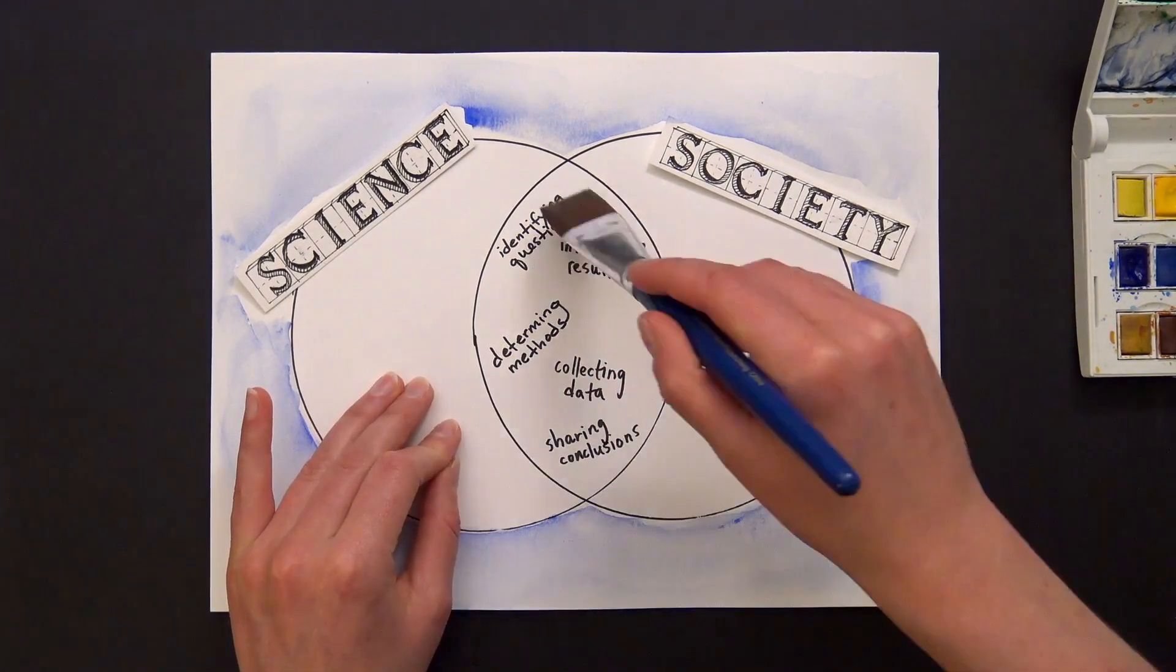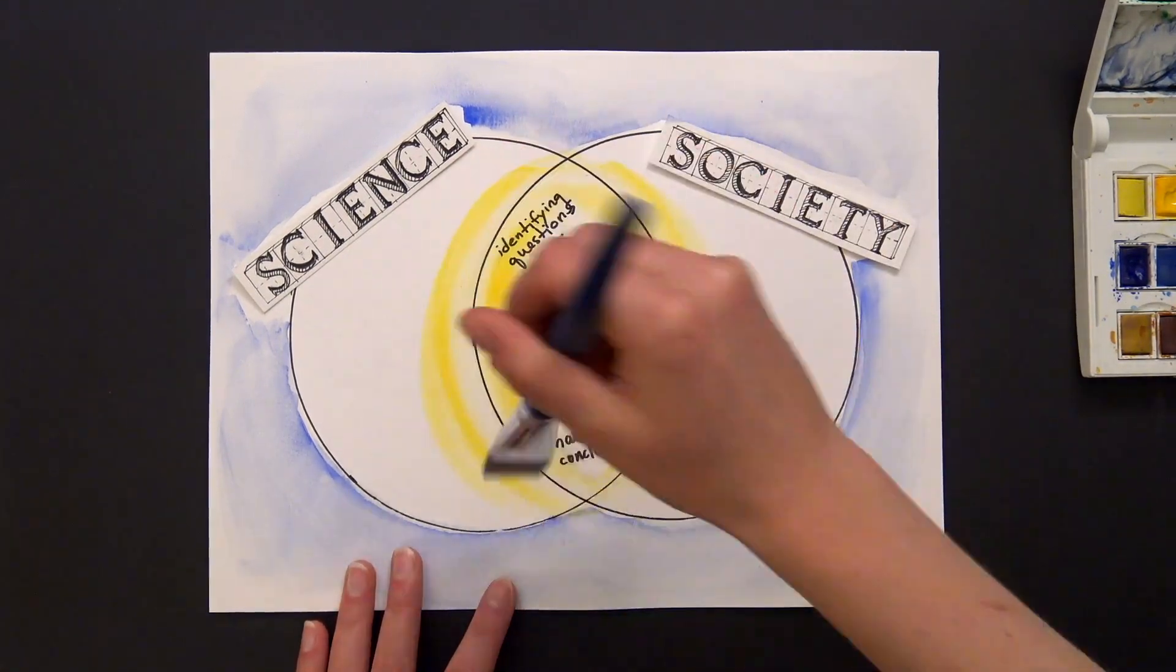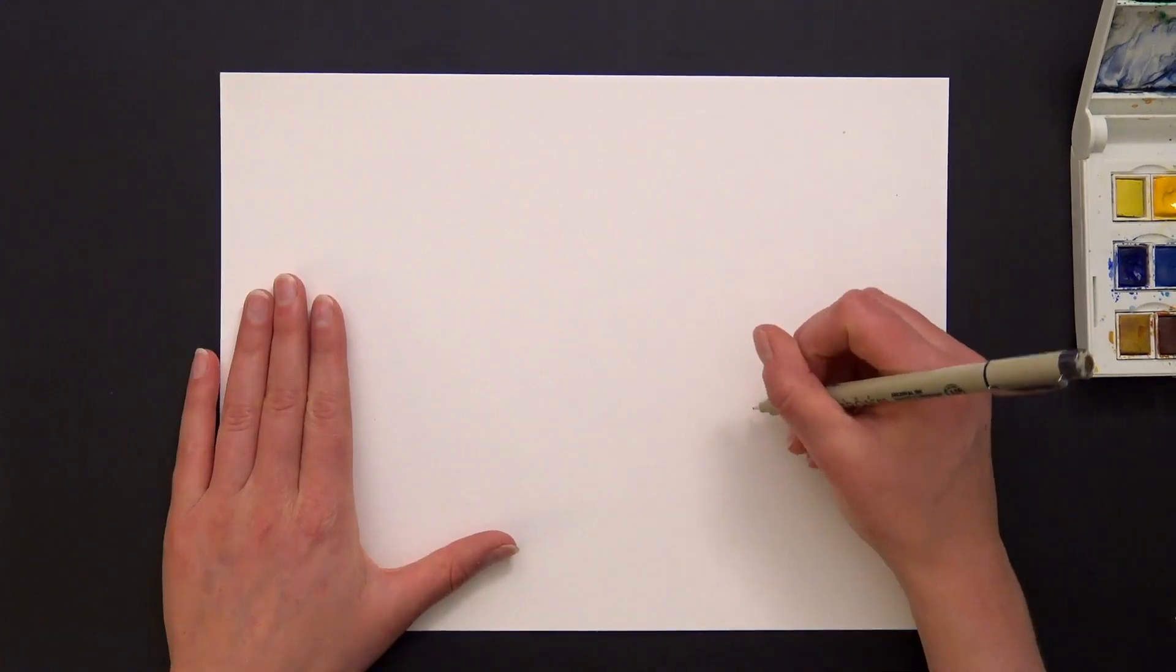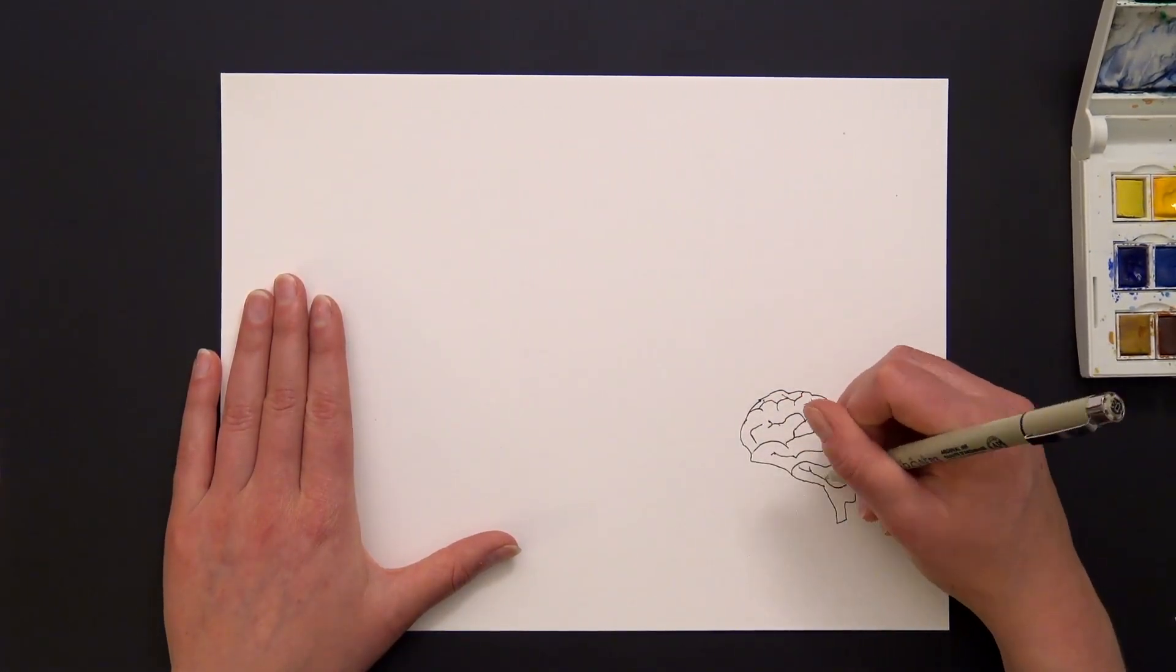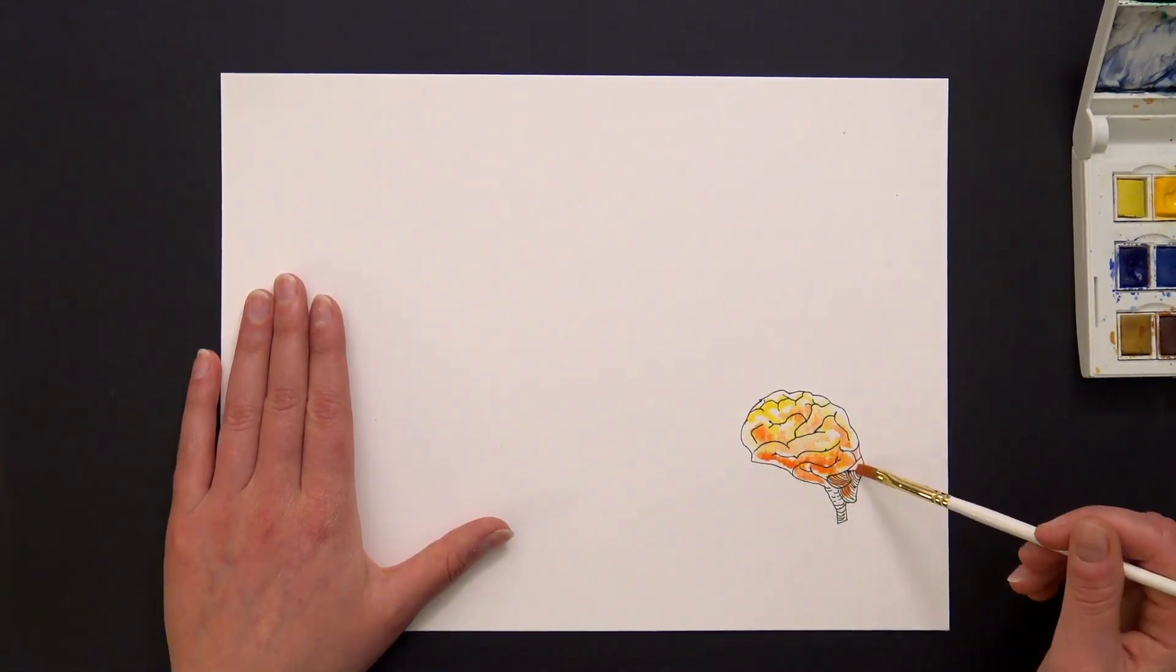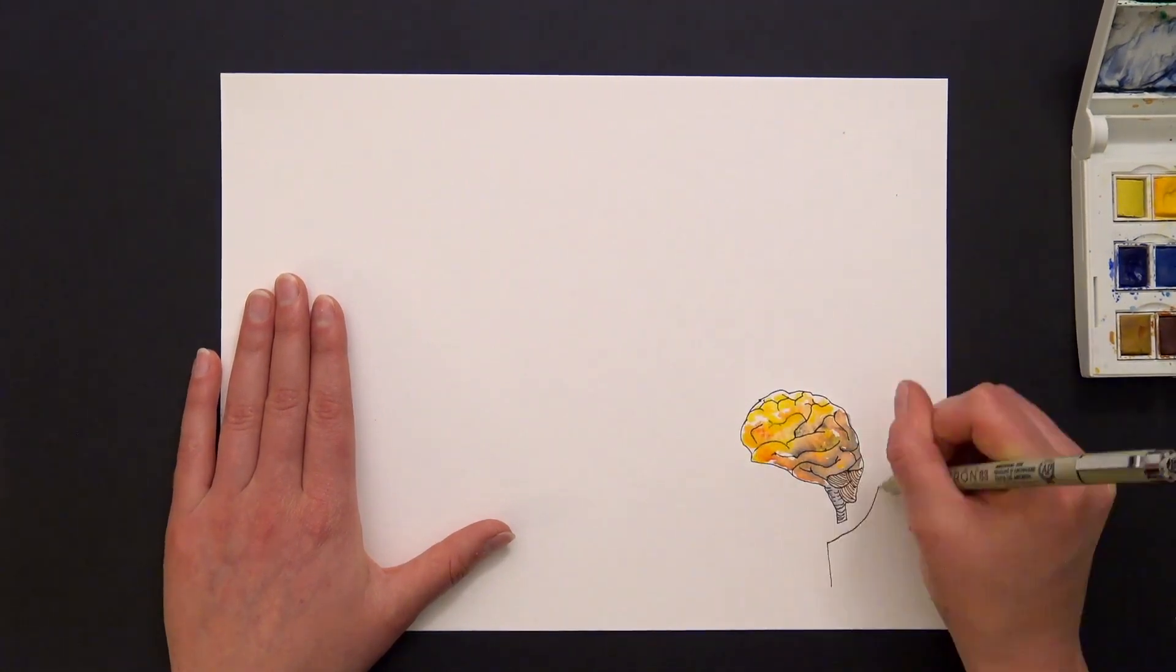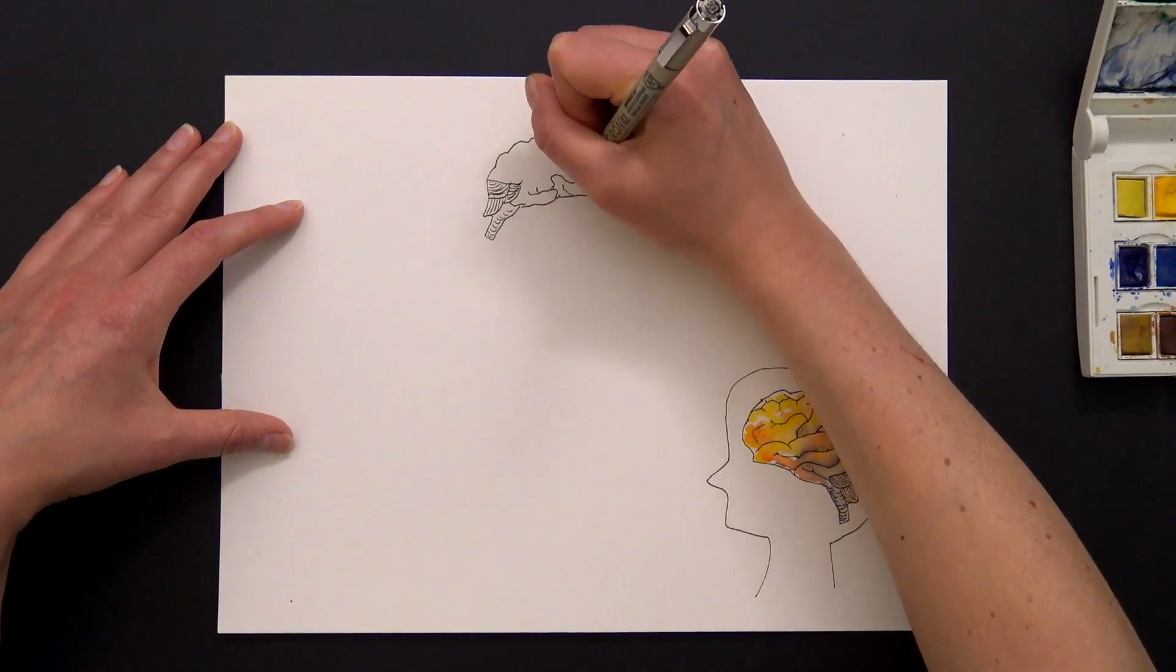While scientists using this approach are still driven by scientific curiosity and a desire for discovery, they are also motivated to see their science contribute more directly to action and solutions. While more scientists are engaging with society, we still know relatively little about how these alternative ways of doing science compare to more conventional approaches. Nevertheless, early glimpses show how different modes advance both science and practice in new, innovative, and exciting ways.